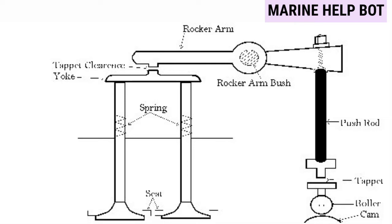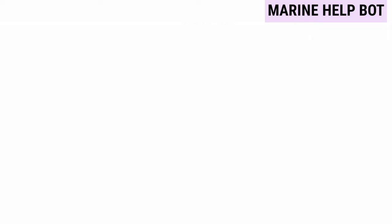This is the diagram showing where we take the tappet clearance. Tappet clearance is basically between the rocker arm and the yoke or the bridge. Don't get confused about these two terms — yoke and bridge — both are the same thing but mentioned according to their makers. I've read two manuals: in one it was written as 'yoke' and in another it was written as 'bridge,' so I mentioned both so you can identify it according to your maker.